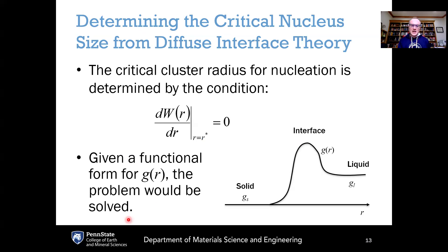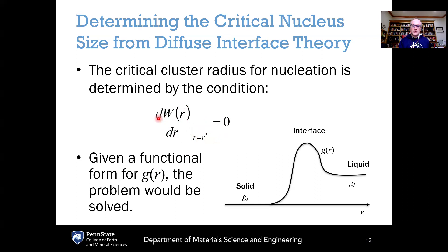The next step is analogous to what we did in classical nucleation theory: we need to calculate the critical cluster radius for the nucleus to be stable. We calculate r*, where if the nucleus radius is greater than r* it will be stable, and if less than r* it would be unstable and shrink. We do that by taking the derivative of the work of formation with respect to r and setting it equal to zero. Solving for r* and putting it back into the original work function gives us the thermodynamic barrier for nucleation.